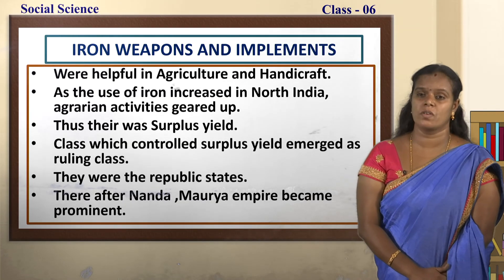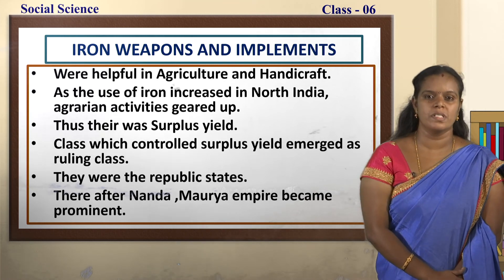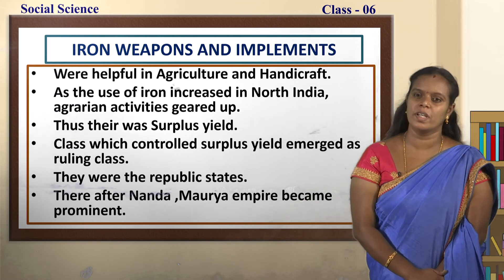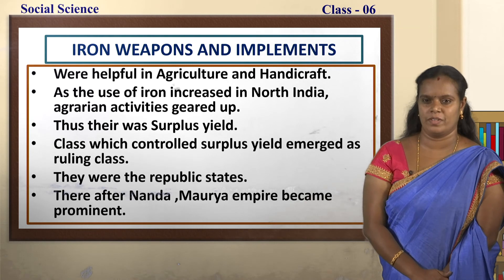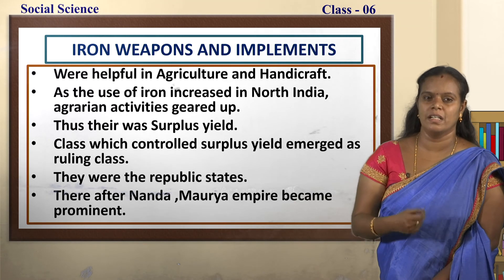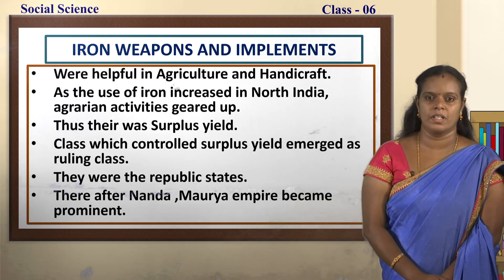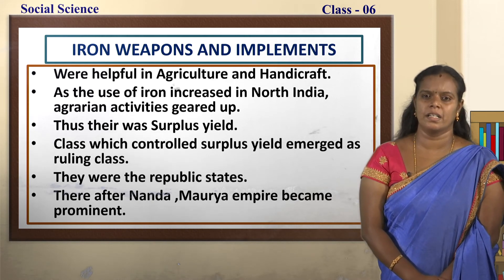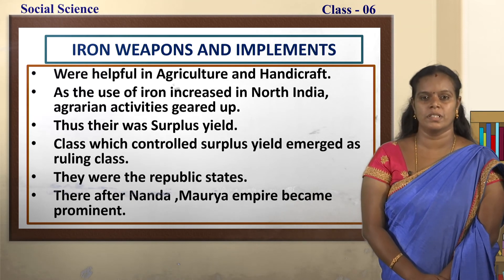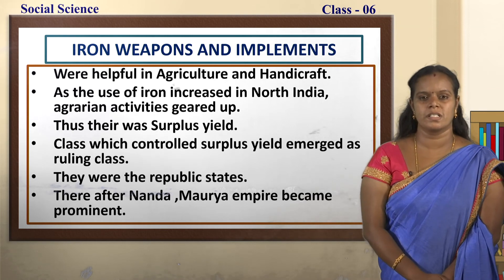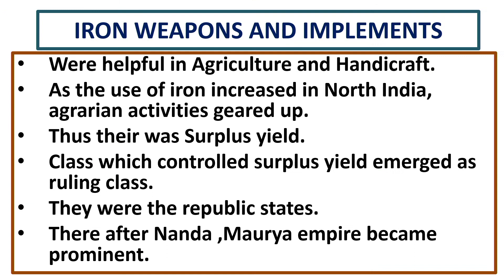These iron weapons were helpful in agriculture and also very useful in handicraft — things made by hand. As the use of iron increased in North India, agrarian activities also geared up, improving agricultural activities greatly. Thus there was surplus yield — the yield left over after requirement. The classes which controlled the surplus yield emerged as the ruling classes, forming the Republic states. Thereafter, the Nanda and Mauryan empires became prominent.